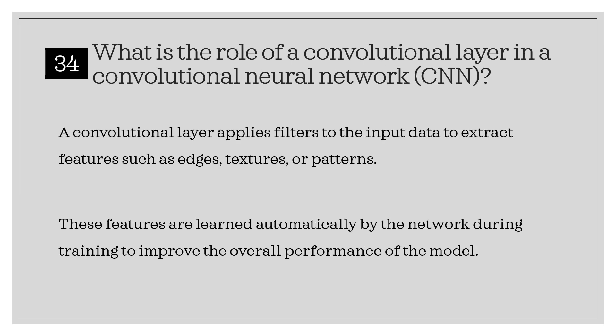What is the role of a convolutional layer in a convolutional neural network? A convolutional layer applies filters to the input data to extract features such as edges, textures, or patterns. These features are learned automatically by the network during training to improve the overall performance of the model.